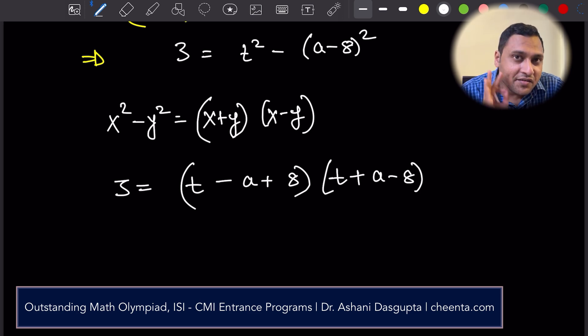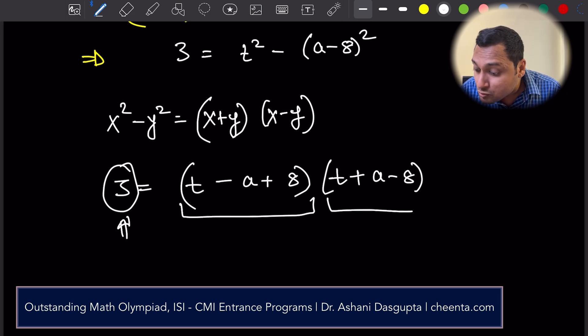One interesting thing that we are going to use here is that the left-hand side is a prime number. If you want to write 3 as a product of two numbers, there is only a few ways that you can do.